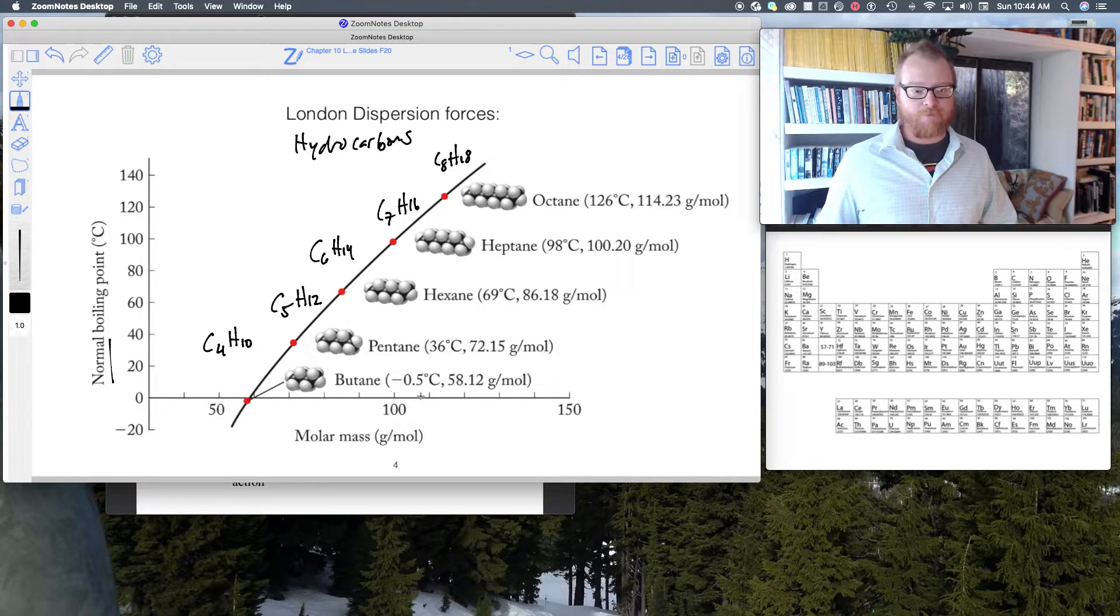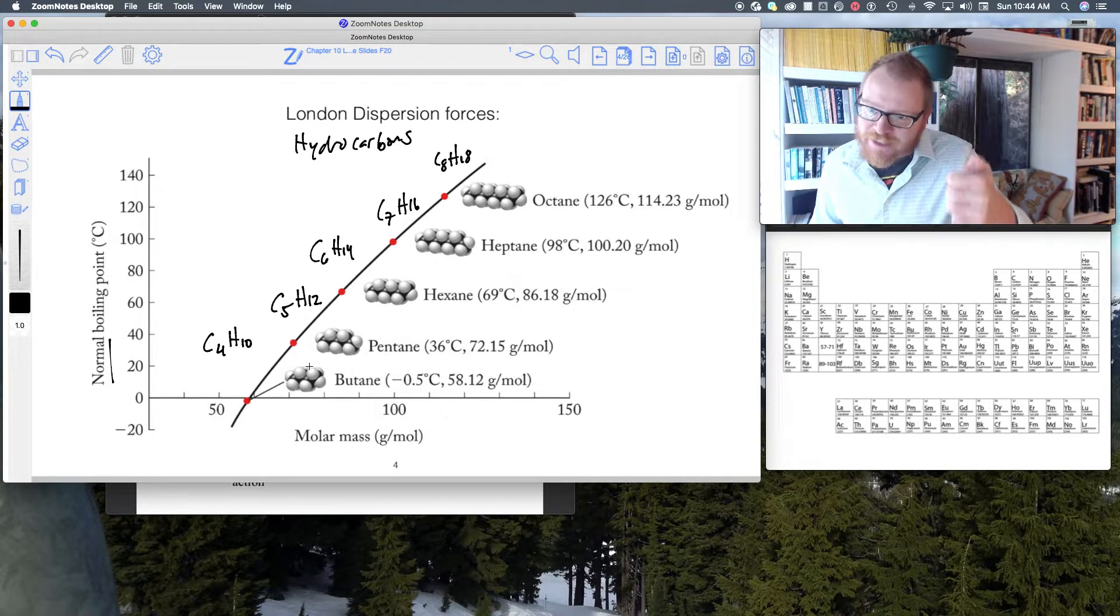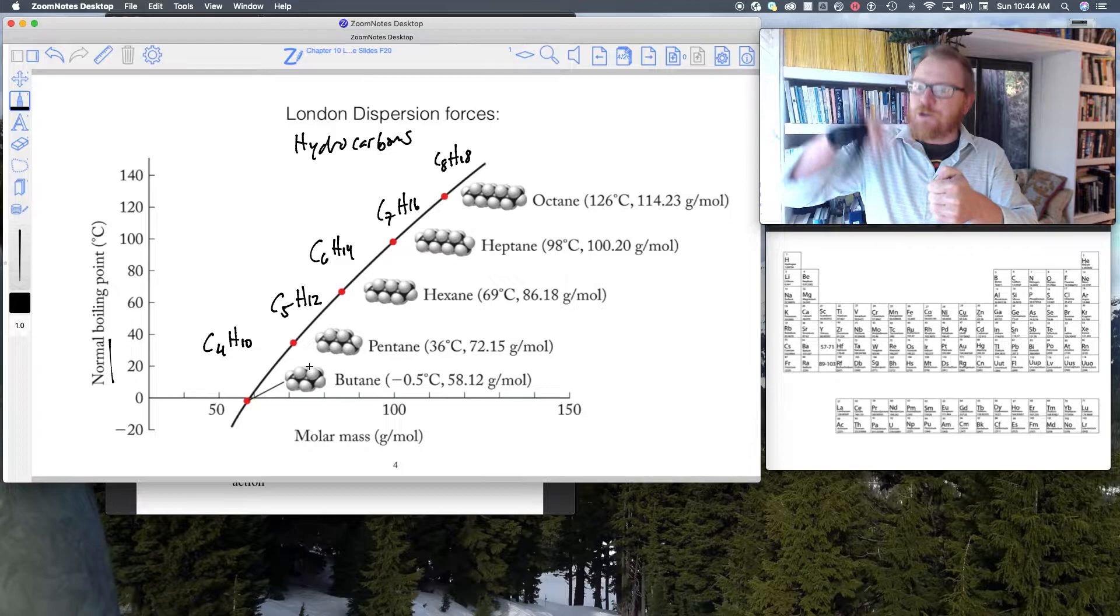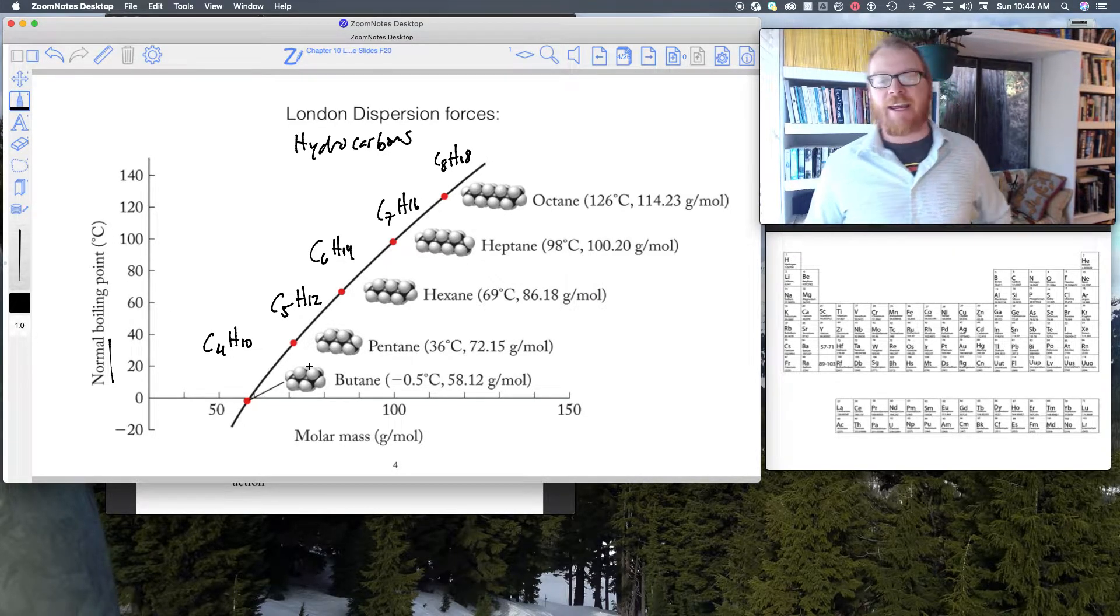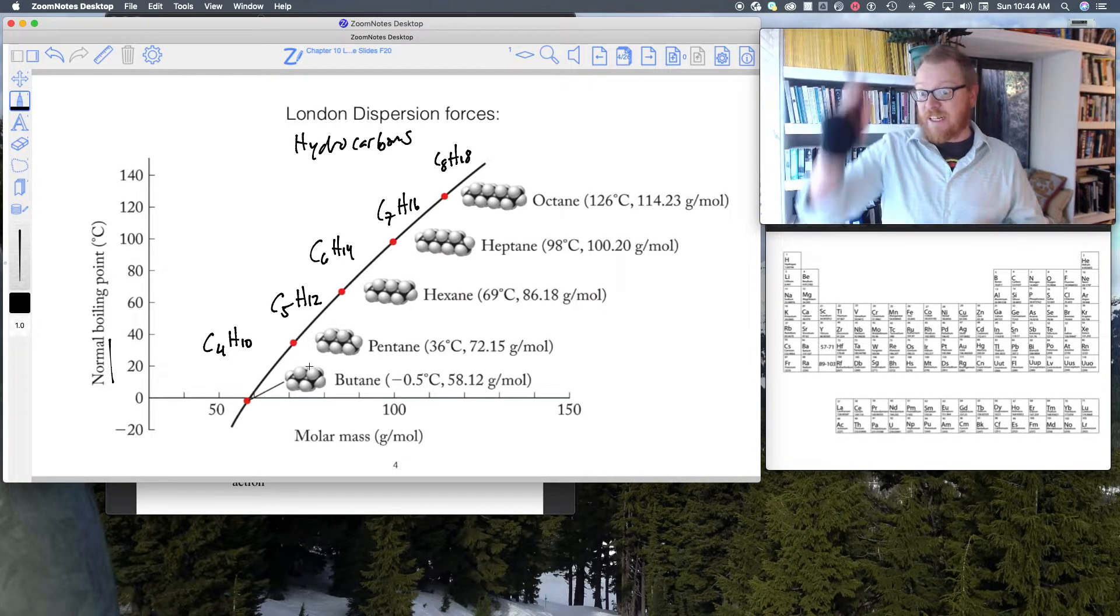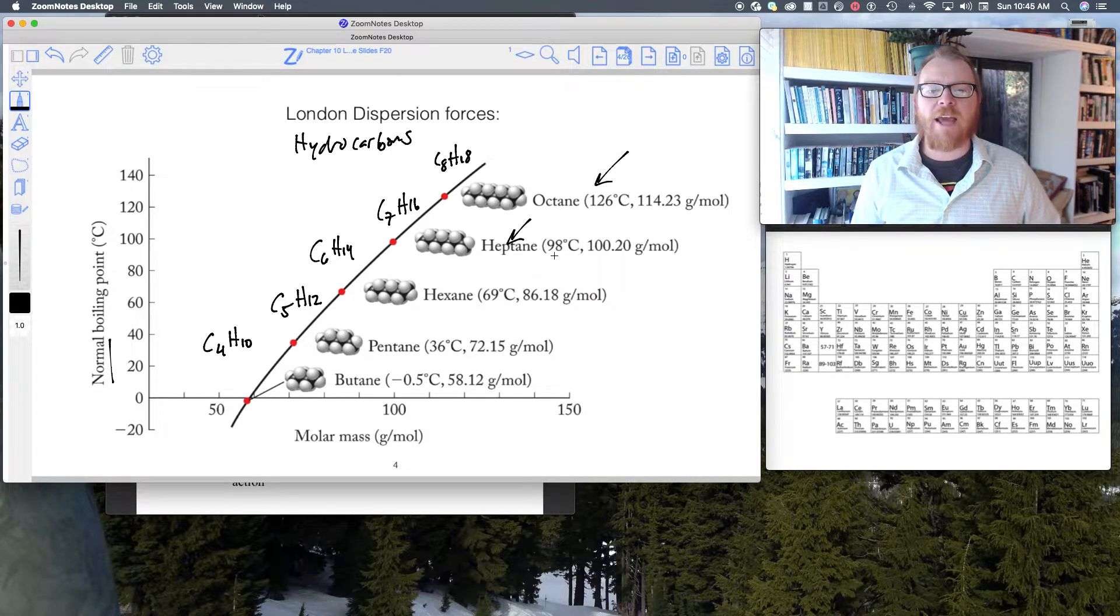I'm going to define for you later on what we mean by the normal boiling point. But if you notice here, butane boils at negative 0.5 degrees Celsius. Those of you smokers out there with your butane lighters, you notice that there is liquid butane in there because it's under pressure. We can force a gas to be a liquid at high pressure.